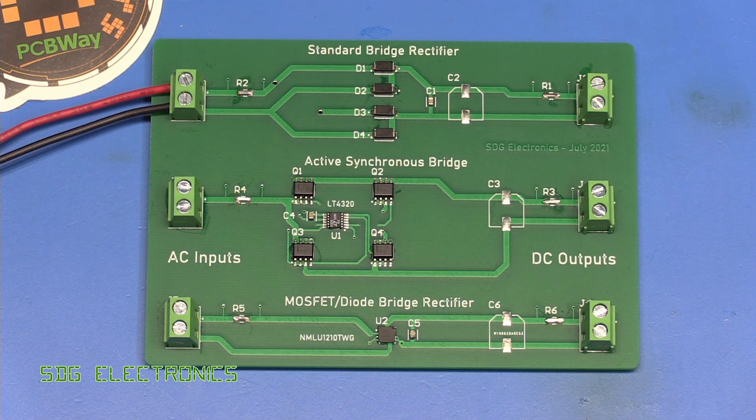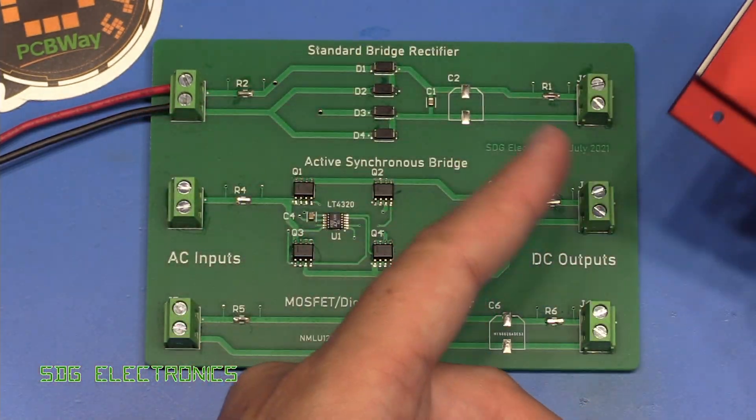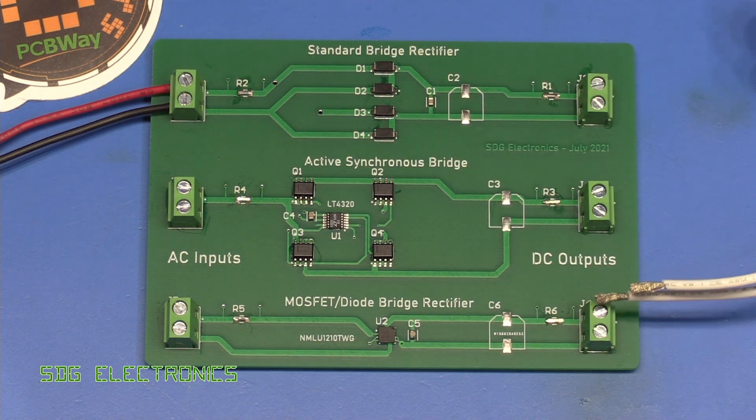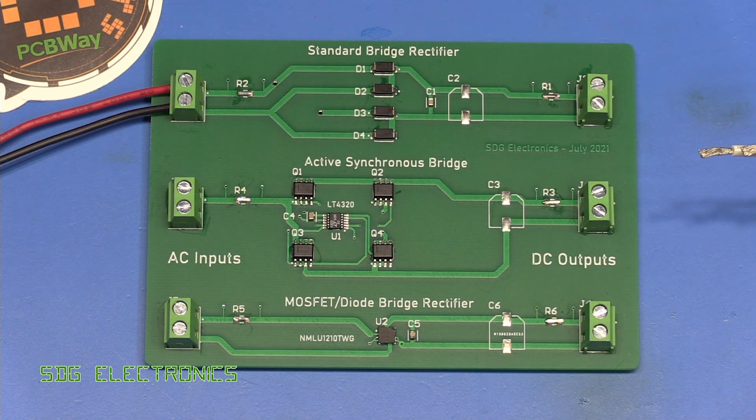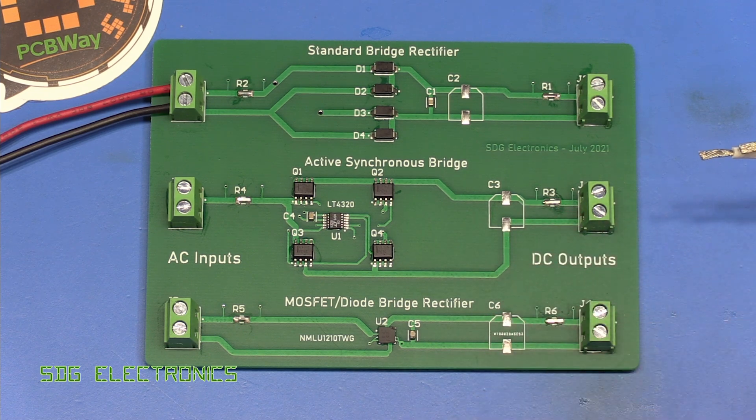So that's all soldered up. I've got a 12 ohm load here which we'll use to load down each of the channels. So let's take a look at what the waveforms look like without the large capacitors on the output.